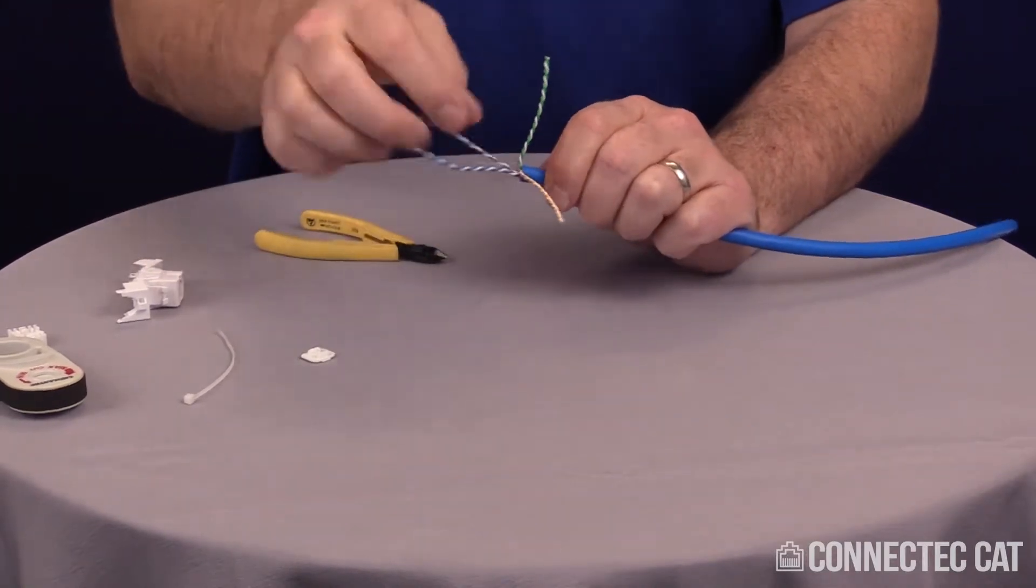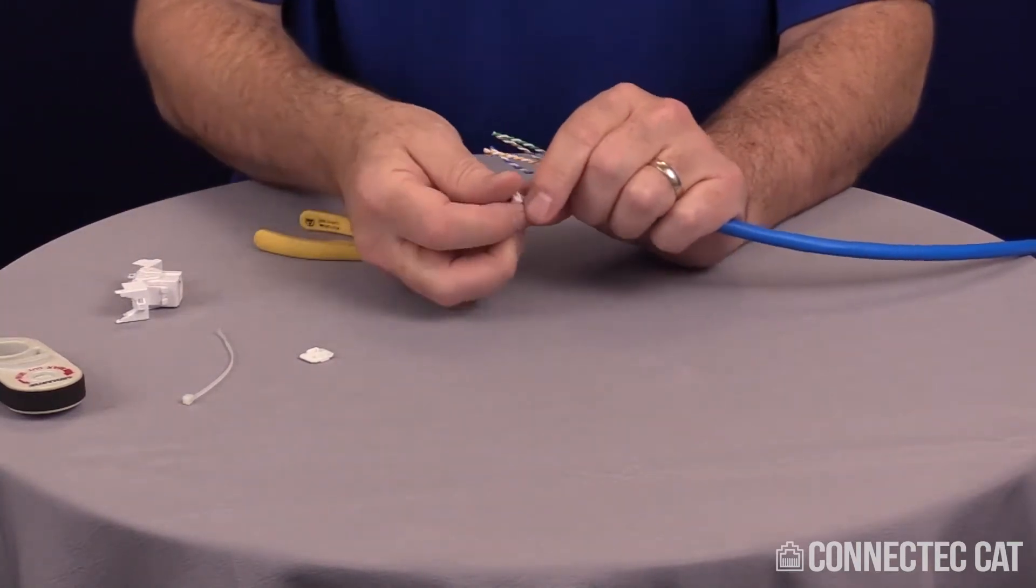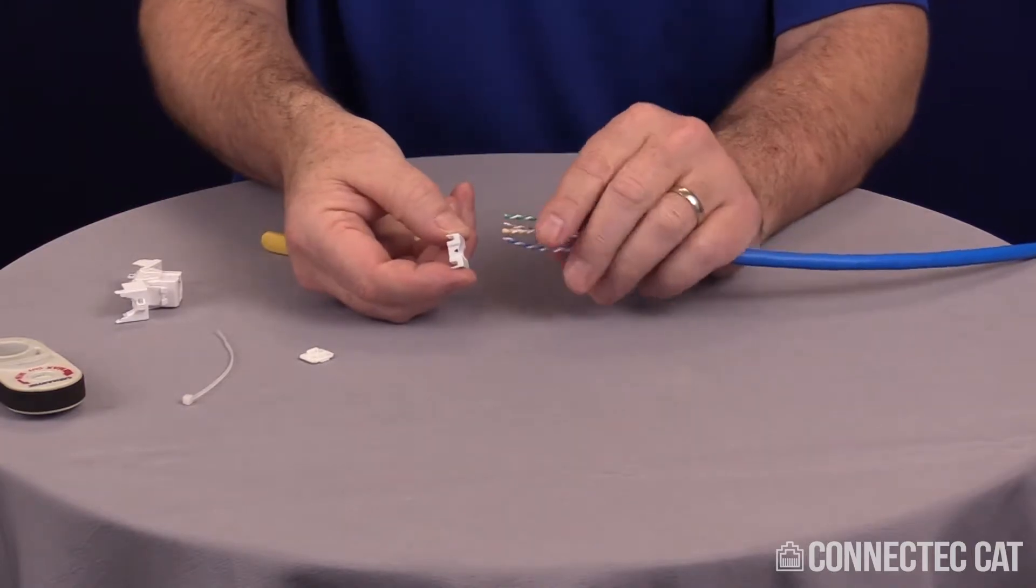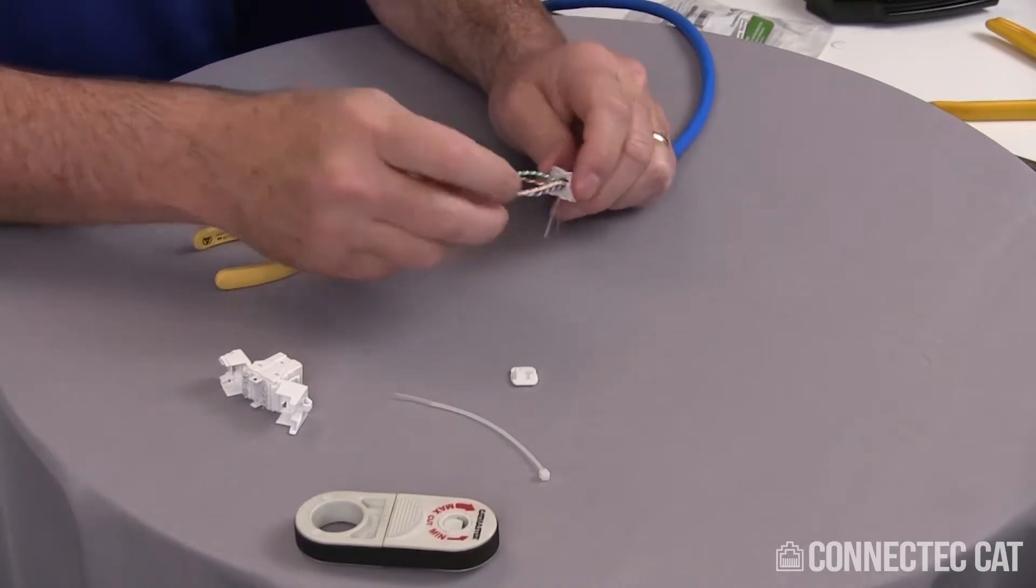Now I'm going to straighten my pairs back out and slide the load bar that came with the connector over it. I want to slide it over with the arrow facing away from the cable. Seat it back against the jacket.